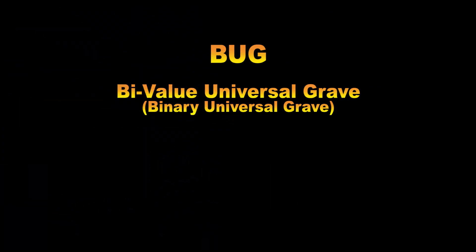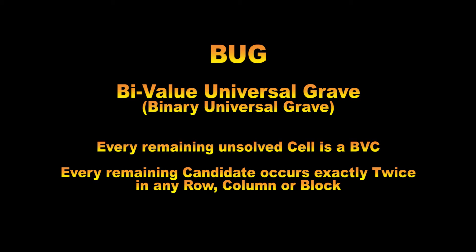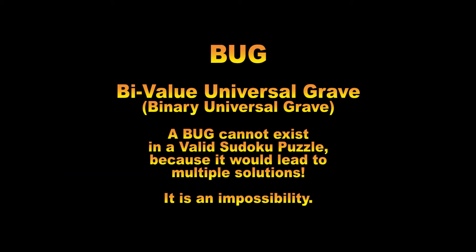In Sudoku, the term BUG is an acronym for bivalue universal grave, or binary universal grave, whichever you prefer. What this means is that if you had a situation when the puzzle is about 80 to 90% solved, where every remaining unsolved cell is a bivalue cell, and every remaining candidate occurs exactly twice in any row, column, or block, then that would lead to multiple solutions, just like the forbidden UR pattern. This configuration cannot exist in a valid Sudoku puzzle — it is an impossibility. That's why it is called a bivalue universal grave, or a bug. Bug meaning there is something wrong. It's a very clever name.